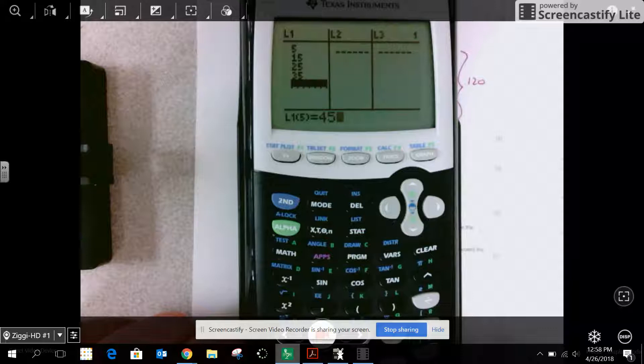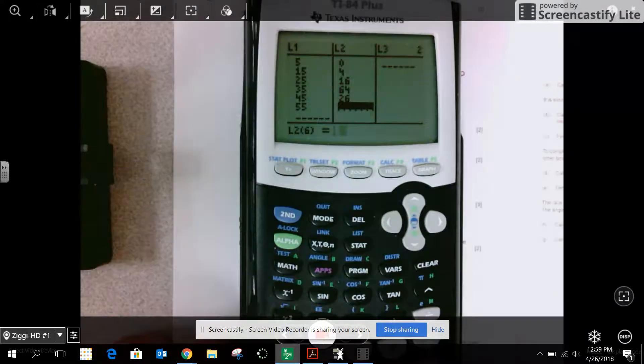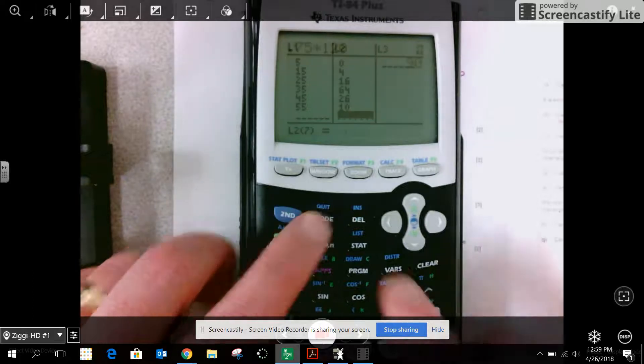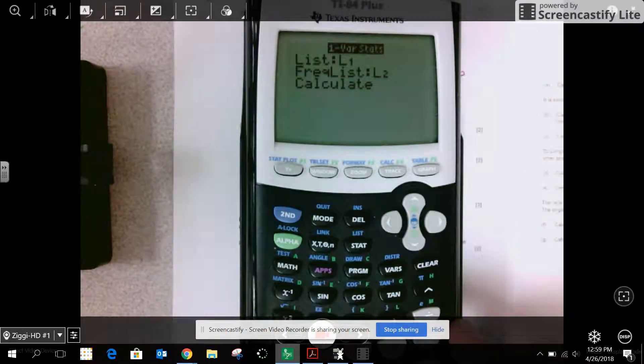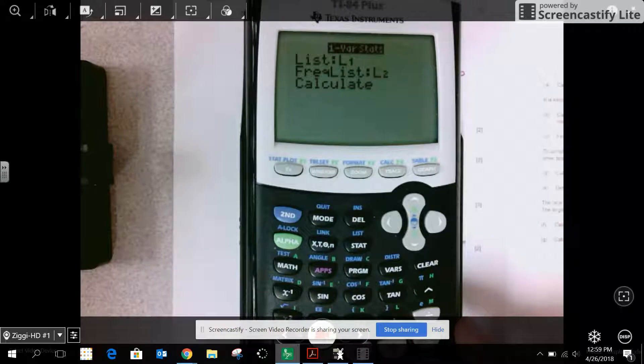And I'm going to do one variable stats. So stat. Calculate. One variable stats. My list is L1. My frequency list is L2. And so I get a mean of 36.8. Standard deviation. I got it. 8.85.